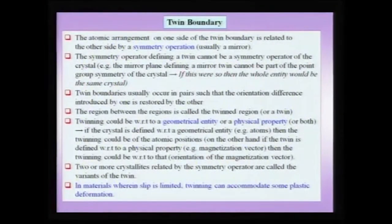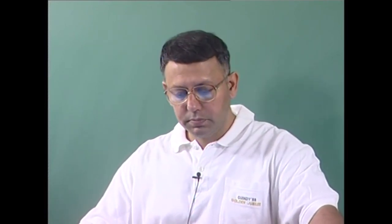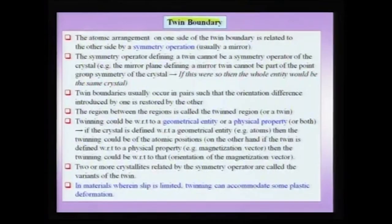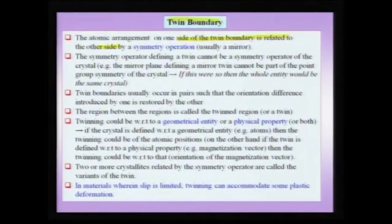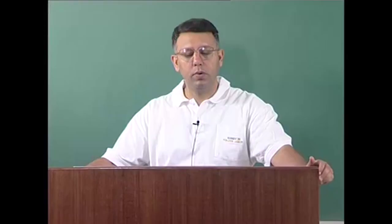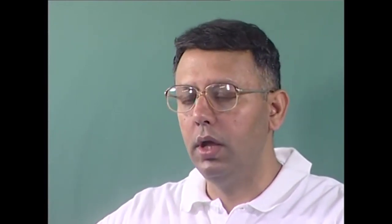The next two-dimensional interface we consider is the twin boundary. The twin boundary is a very special kind of boundary — in some sense a very regular kind of boundary compared to other two-dimensional defects in a material. The atomic arrangement on one side of a twin boundary is related to the other side by a symmetry operation. This symmetry operation is typically a mirror, giving what is known as a mirror twin, but you could also have inversion twins and rotation twins. The symmetry operator defining the twin itself cannot be a symmetry operator of the crystal, because if it were, the crystal would continue across the interface and we would have no distinct boundary and therefore no twin.